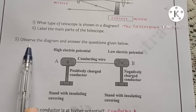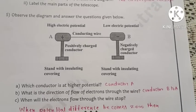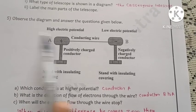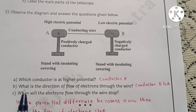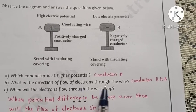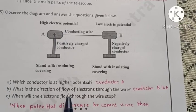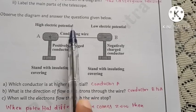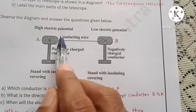Fifth: observe the diagram and answer the questions given below. First question: which conductor is at higher potential? Conductor A is at higher potential because positive is here. What is the direction of flow of electrons through the wire? Direction of flow of electrons through the wire is conductor B to A.